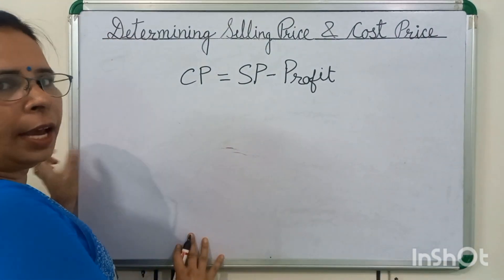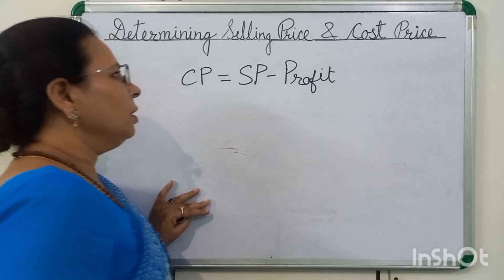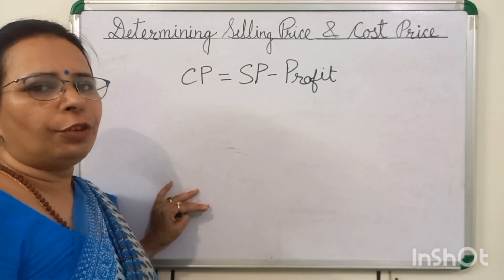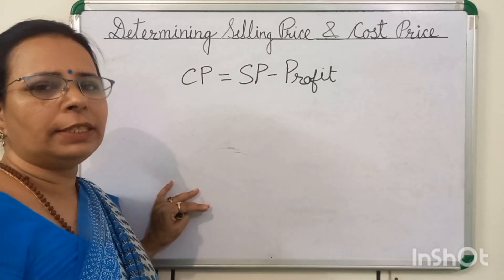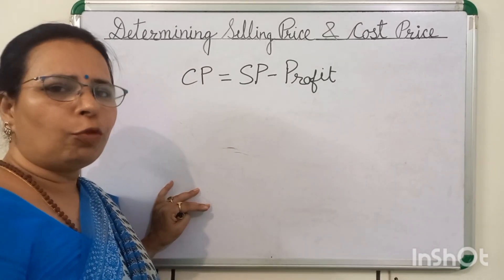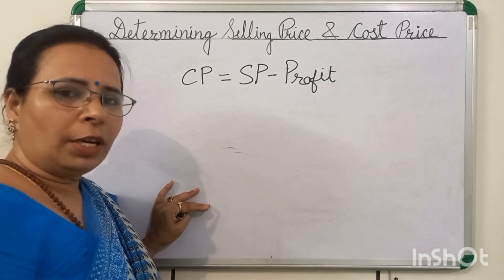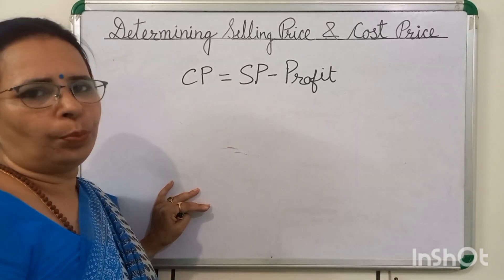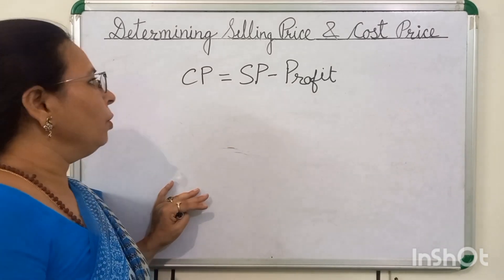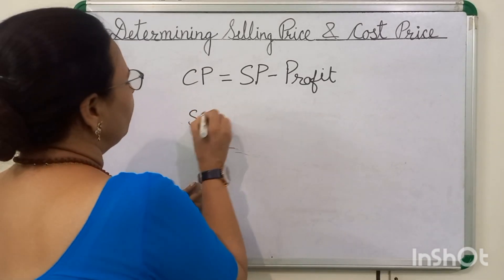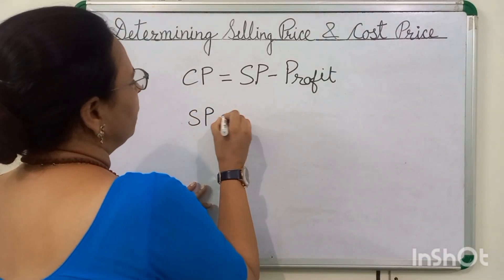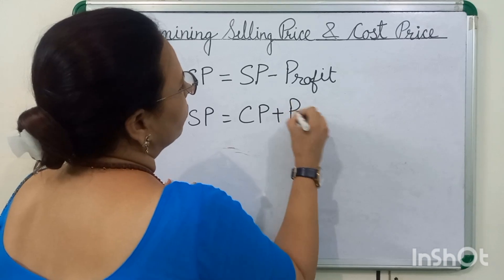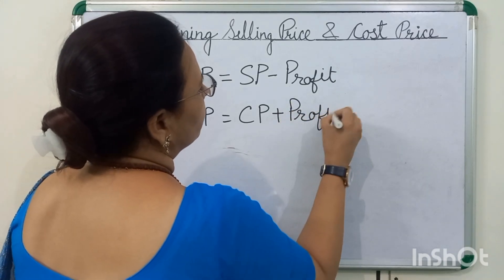In another question, cost price and profit are given and we have to find selling price. We will add cost price and profit. And the formula of selling price is equal to CP plus profit.